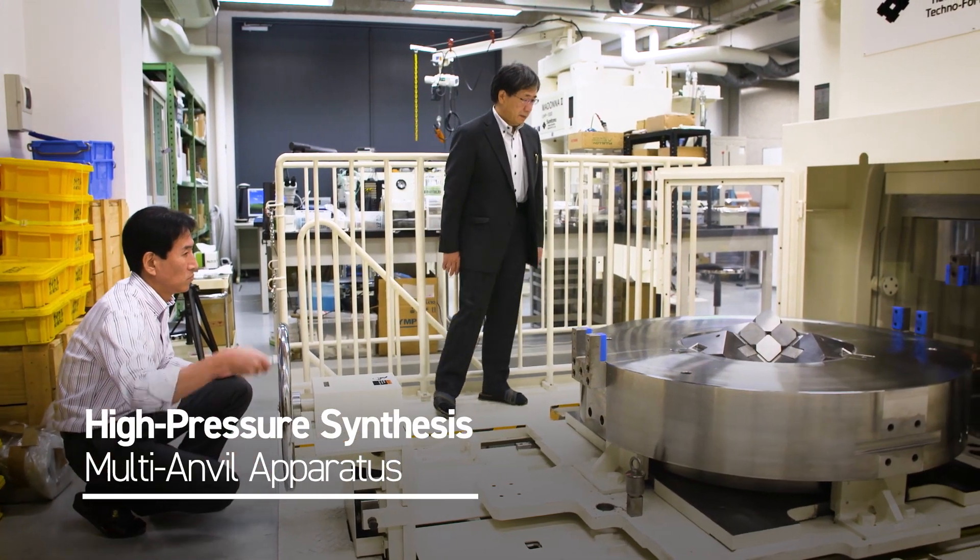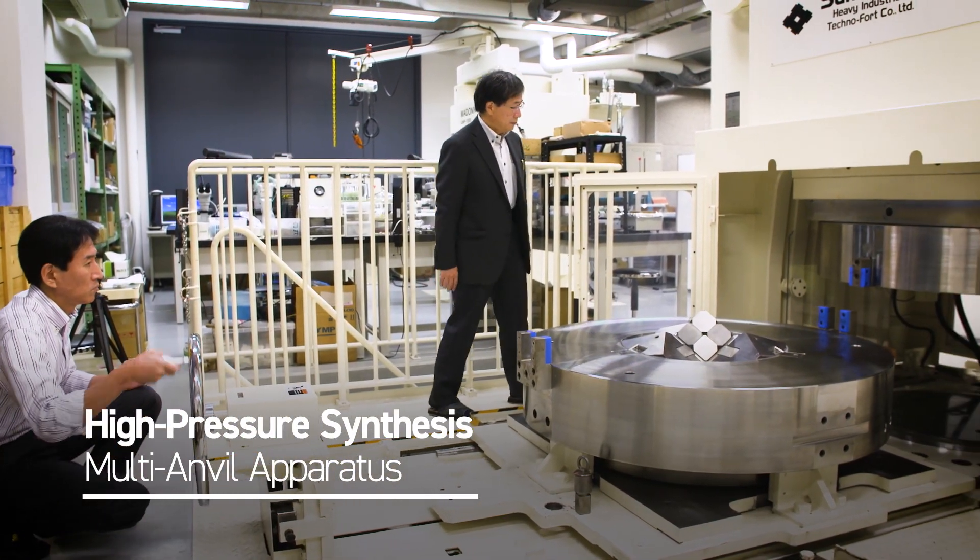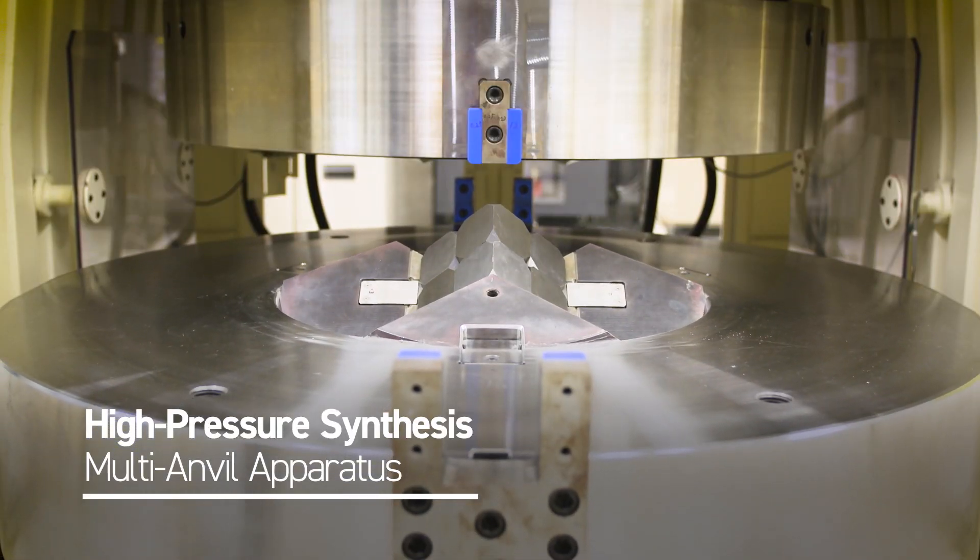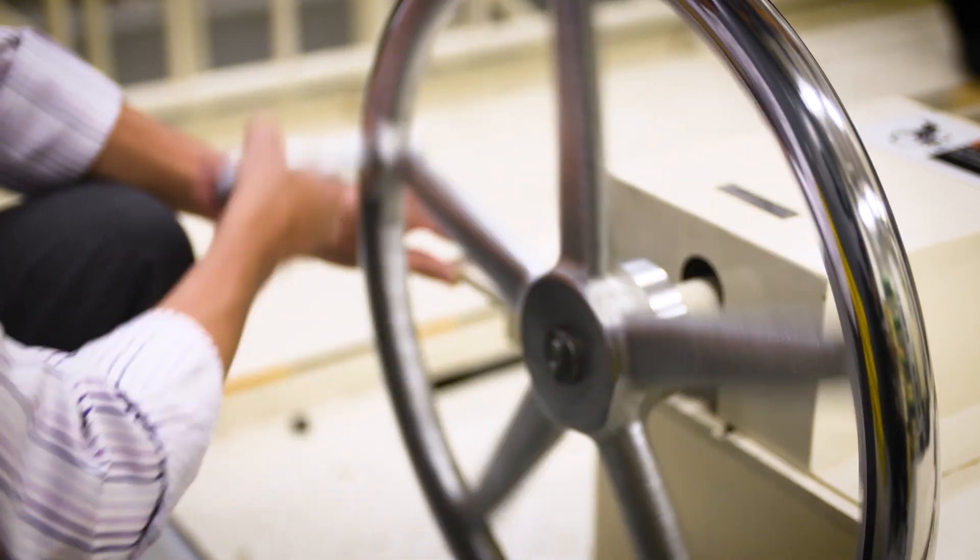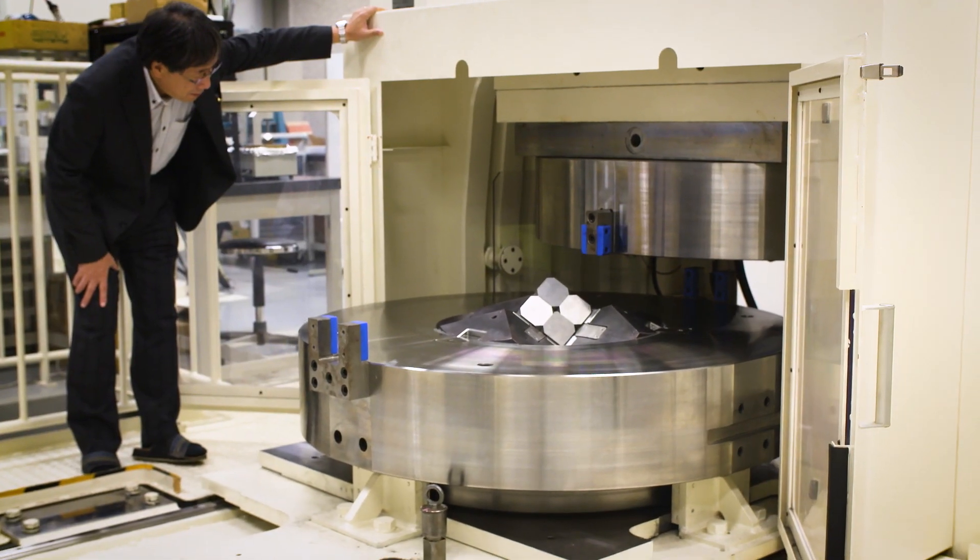The multi-anvil apparatus, which uses a large volume press, provides well-controlled pressures and temperatures in much larger sample volumes, under conditions of the lower mantle.